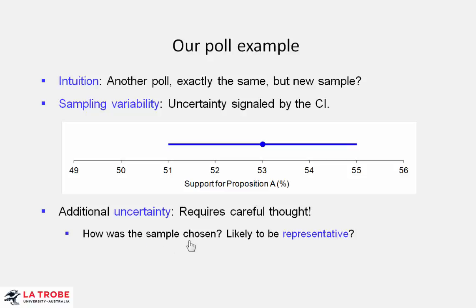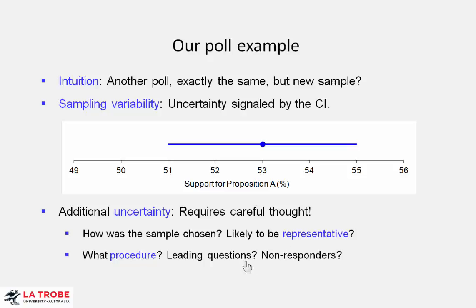For example, how was the sample chosen? Was the poll taken only with listeners to some particular radio program? If so, it's hardly likely to be representative of the whole population of likely voters. What was the procedure? Were there leading questions asked? What did the pollsters do about people who declined to respond or couldn't be contacted? Maybe we're only seeing the result of one of the questions, but other questions were asked, so we're seeing selected results. Maybe even there were other polls taken, and whoever gave us the result selected which poll to tell us because it matched some political agenda.